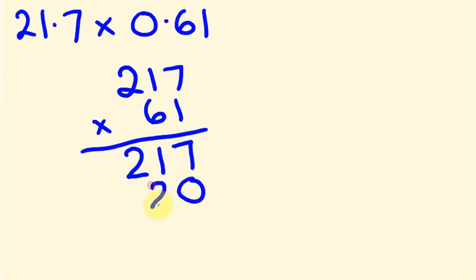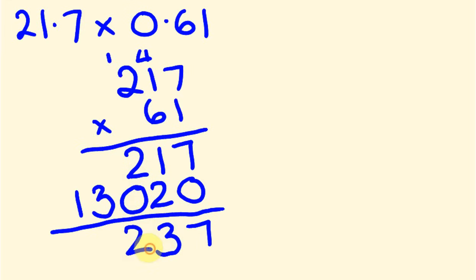7 sixes are 42. Carry the 4. 1 six is 6 plus 4 is 10. Carry the 1. 2 sixes is 12 plus 1 is 13. And now we're going to add our answer here. So we have 7, 3, 2 plus 0 is 2, 3, 1.